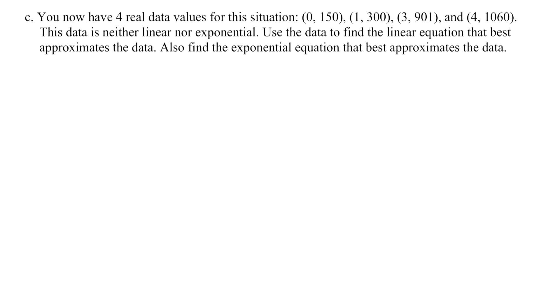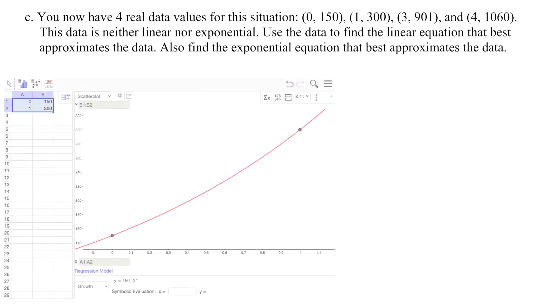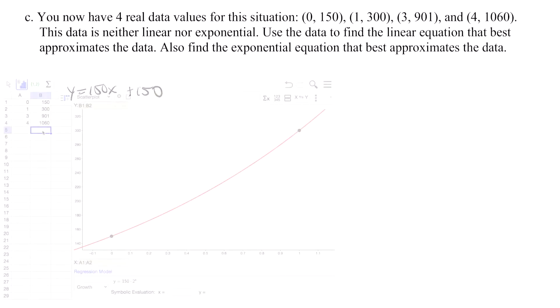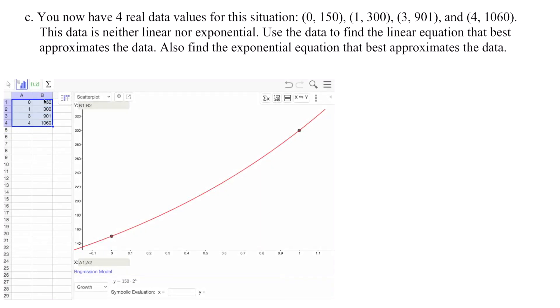Let's continue. Now we have four actual data values for this scenario. This data is neither linear nor exponential. Let's use this new set here to find the linear equation that best approximates these values as well as the best exponential equation. To do this, we need to go back here to GeoGebra, and we're going to add some more points. I'm going to add in 3, 4, and then for 3 we have 901 as our Y value. For 4, we have 1060 as our Y value.